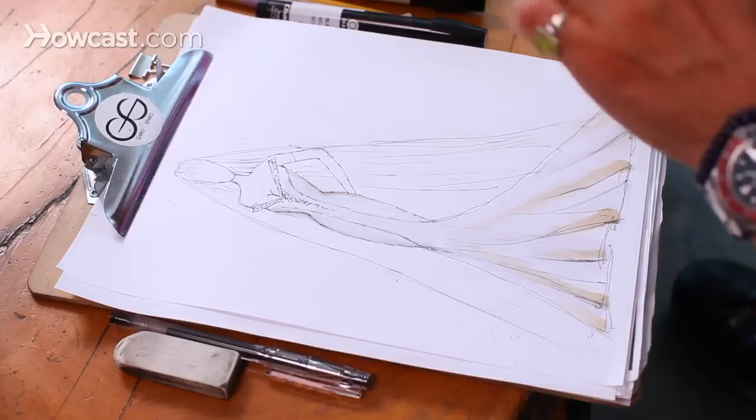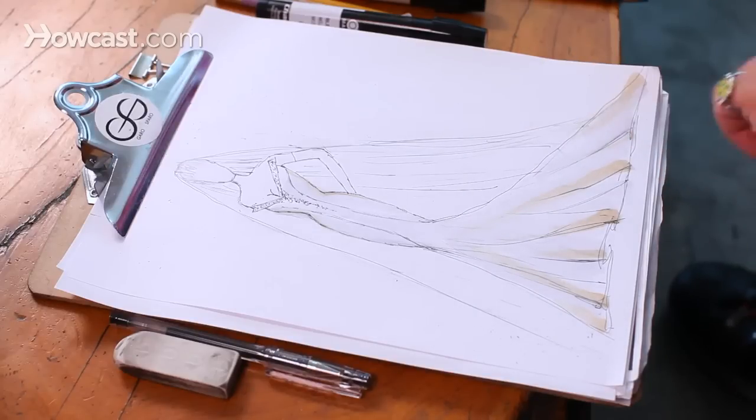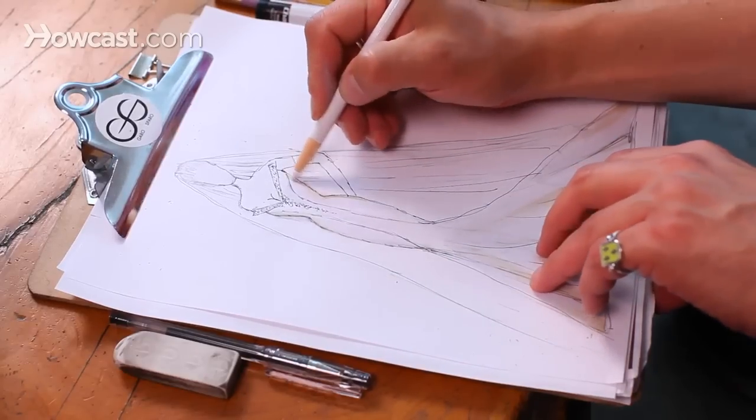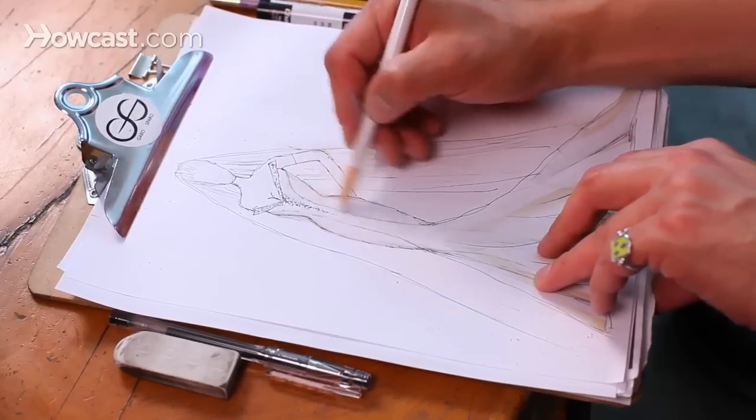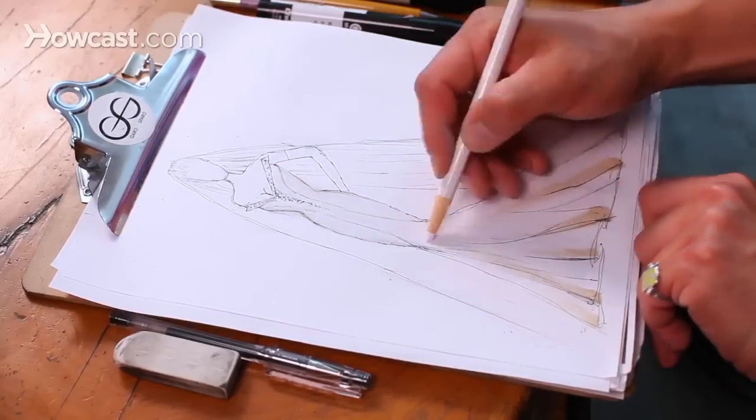Then you take your China marker, which is a great thing for creating details on black or white, just to make certain things pop. And just fill in the whole thing. It will lighten it up, it will blend everything together.